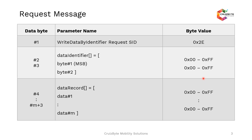Other use cases include resetting some values in the field, or when you change the injector in the engine management system and want to write the injector codes. Also, if you are working in a body control module where the key is changed, the key identifiers need to be placed in the body control module.